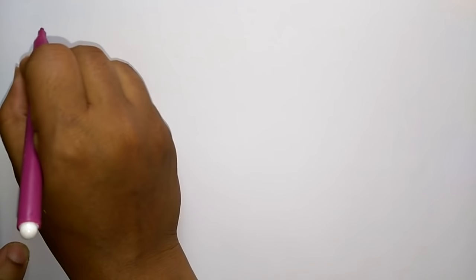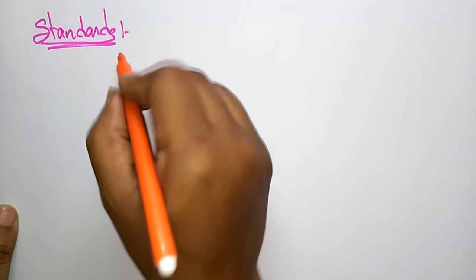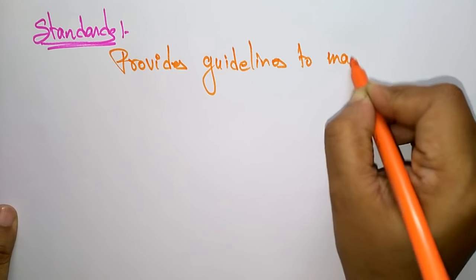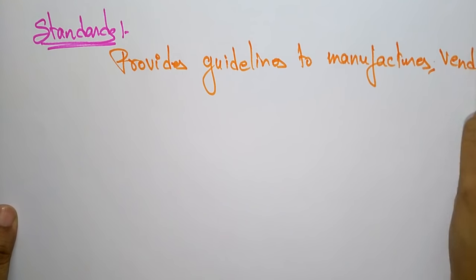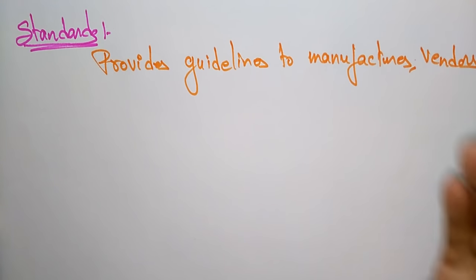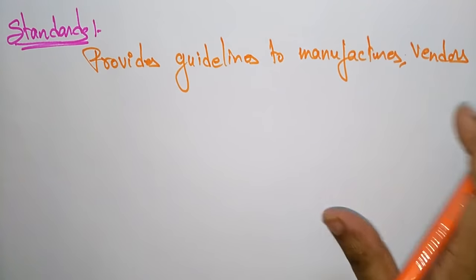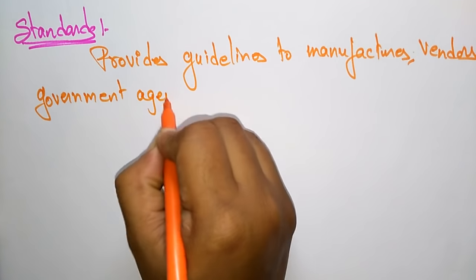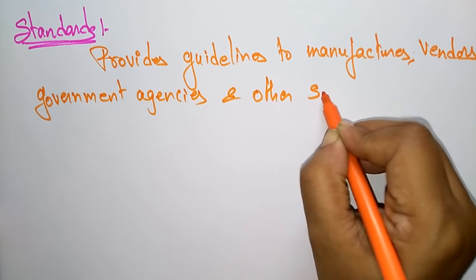So what is the difference between protocol and standards? A protocol consists of a set of rules which governs data communication. Standards, on the other hand, provide guidelines to manufacturers, vendors, or government agencies and other service providers.